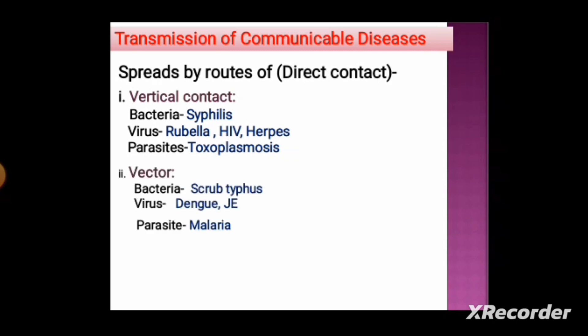Vector-borne diseases spread by direct contact include the bacterial disease scrub typhus, where the vector is the chigger mite. Viral diseases include dengue, Japanese encephalitis, and chikungunya, transmitted by mosquitoes. The parasitic disease malaria is also transmitted by the mosquito vector.